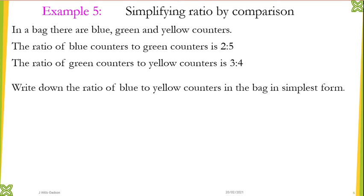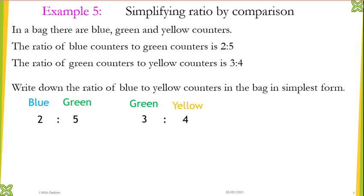Write the ratio of blue to yellow counters in the bag in simplest form. If you look carefully, we have two divisions: blue to green on one side, and green to yellow on the other. We write our ratio in that format — first section: blue to green is 2 to 5; second section: green to yellow is 3 to 4. We need to write the overall ratio as blue to yellow. You need to remember that the same green here, which is 5, has now become 3.